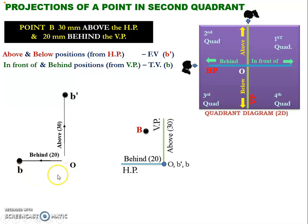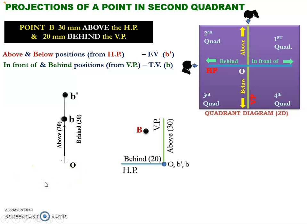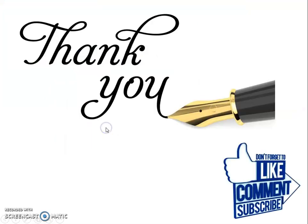After getting this horizontal line, that is the OB line, we need to rotate this OB line 90 degrees clockwise, which will give us the final solution. After getting this final solution, we have to represent the same on a 2D paper. Thanks for watching this video, hope you have understood the concepts very well.